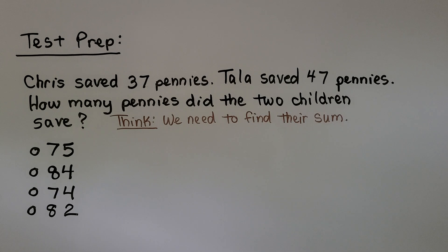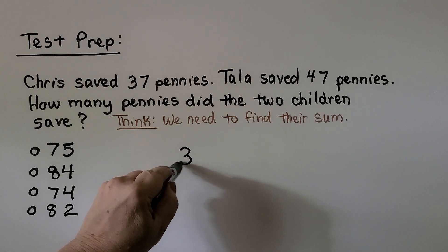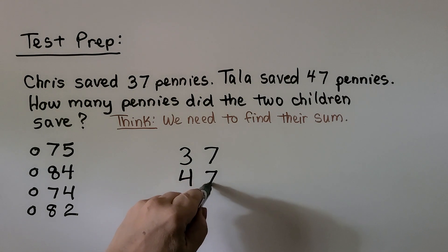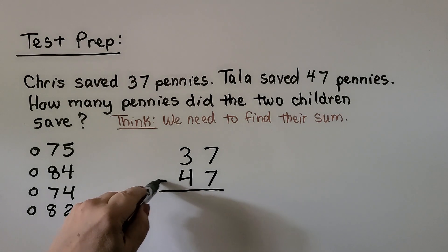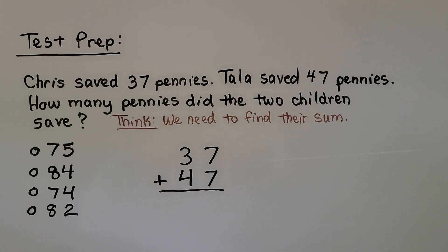We need to add 37 and 47, and we need to choose one of these as the answer. We can write 37, and we can line up the columns and put 47 very neatly stacked with tens and ones.